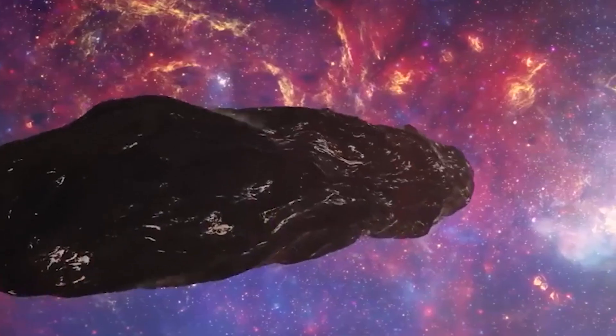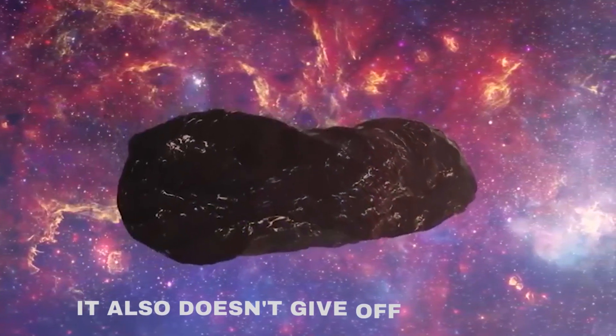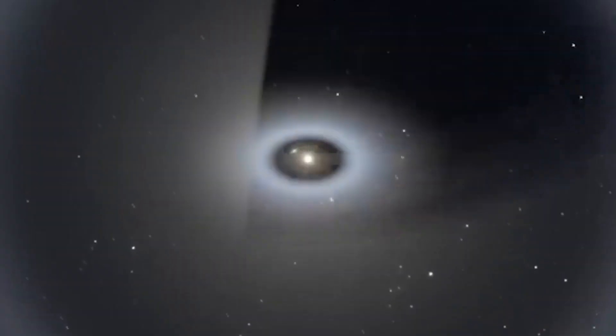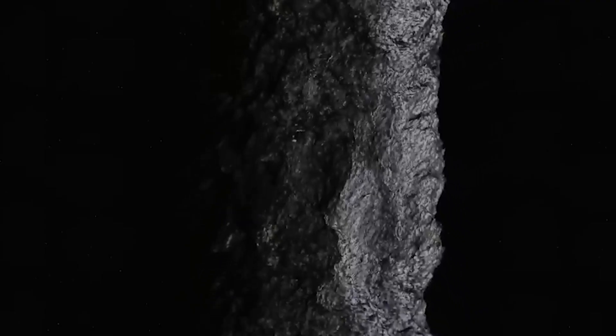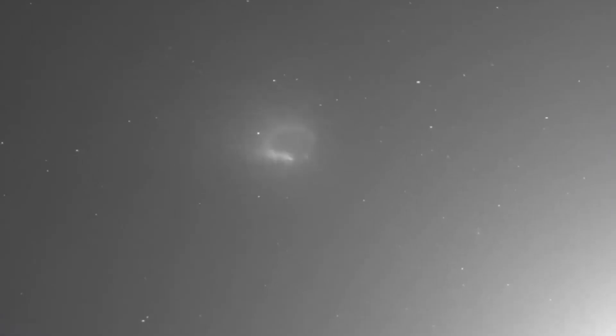No visible light. Oumuamua isn't just strange in shape and spin. It also doesn't give off any light. Imagine a comet with a bright glowing tail or an asteroid reflecting sunlight. Oumuamua is different. It's dark, almost like it's hiding in the shadows of space.